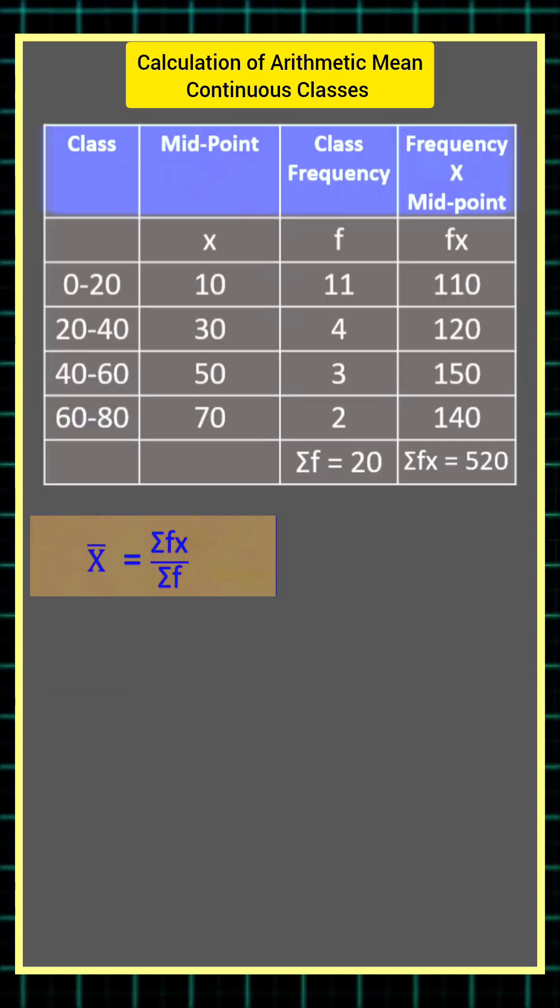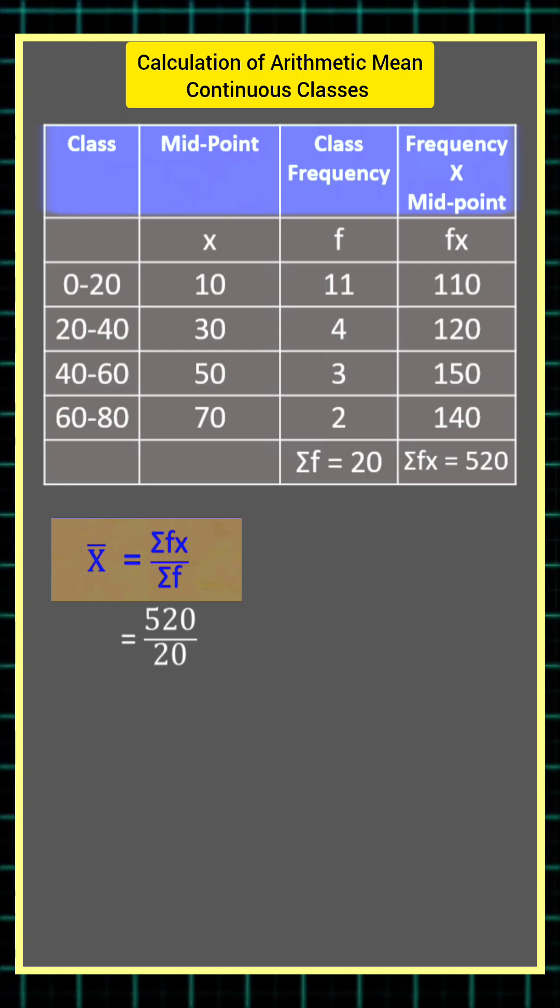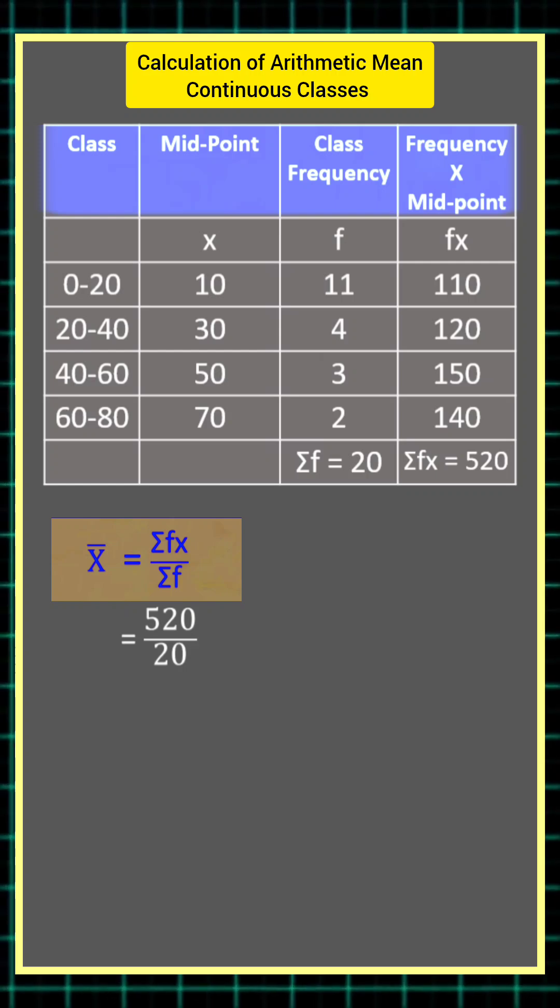The formula for arithmetic mean is summation of fx divided by summation of f. So 520 divided by 20. This comes out to be 26.